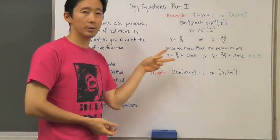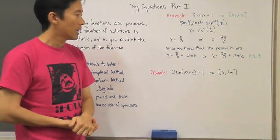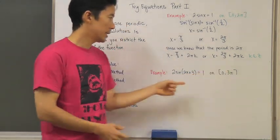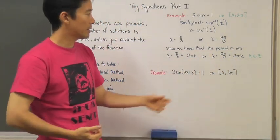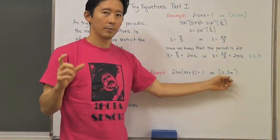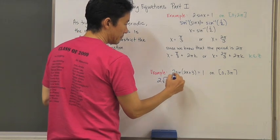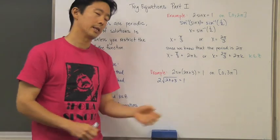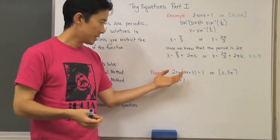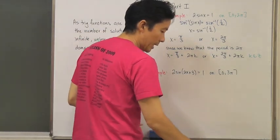When we come across something more complicated like two sine of two x plus three equals one, and it has an unusual domain, we might first disregard the domain restriction, find all solutions, and then test particular integer values of k to find which values of x fall within the restricted domain. Solving this is exactly the same process — it just uses inverse operations, plus the inverse sine.